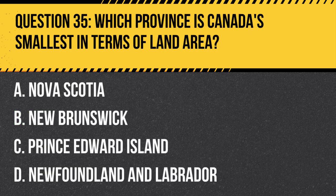Question 35. Which province is Canada's smallest in terms of land area? A. Nova Scotia. B. New Brunswick. C. Prince Edward Island. D. Newfoundland and Labrador.